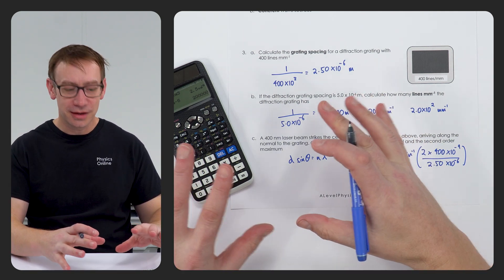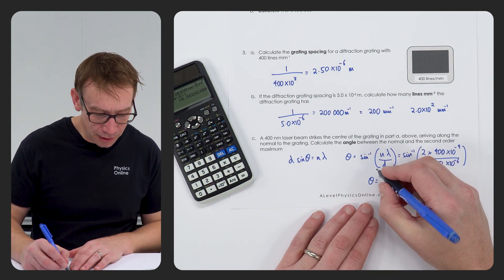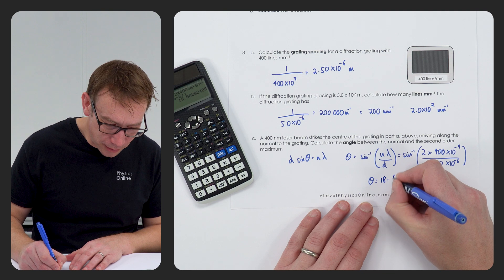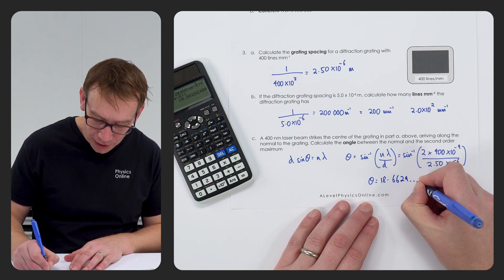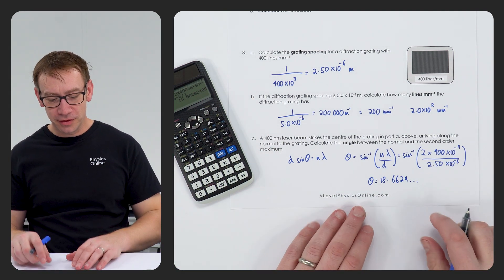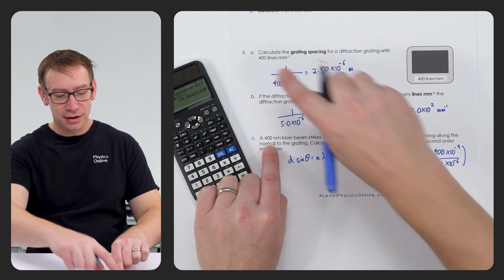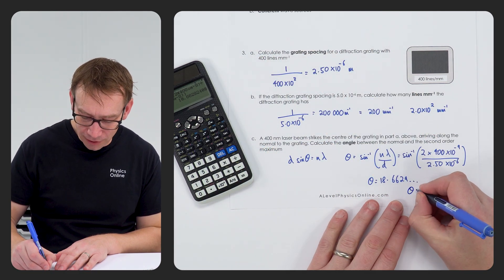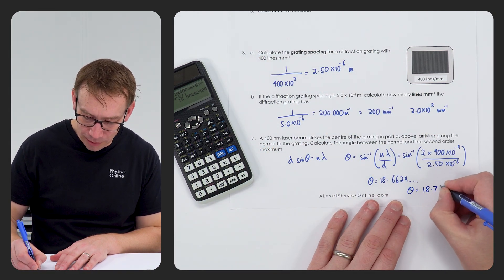So you can just put that all into your calculator, giving me an answer equal to 18.6629. But we're going to give the final answer to three significant figures like the other numbers, and therefore theta equals 18.7 degrees.